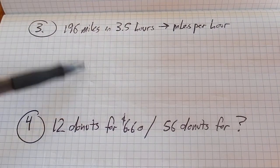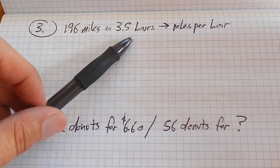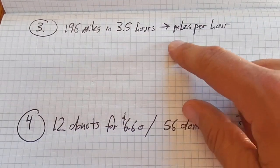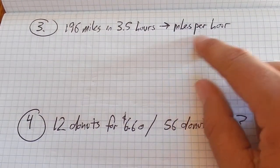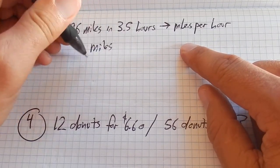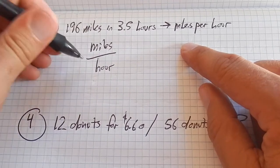So question 3: Scotty drives 196 miles in 3.5 hours. How many miles per hour is that? What I love about this problem - miles per hour - that's actually telling us how to set it up. We want to know how many miles per one hour.